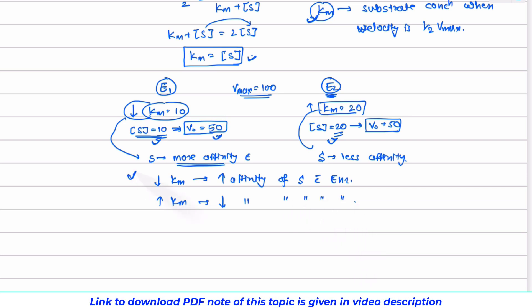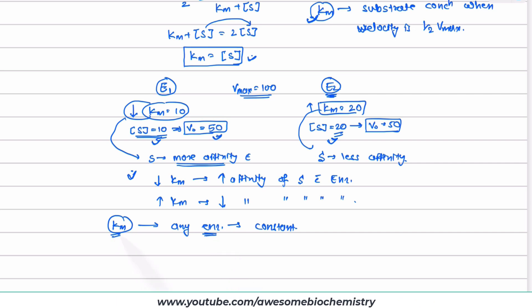The third important thing is that the Km value of any enzyme is constant or fixed. It is a characteristic of that particular enzyme. It is like a thumb impression or signature of a person — for a person, a signature or thumb impression is unique to them. So similarly, for any enzyme, their Km value is going to be unique for them.